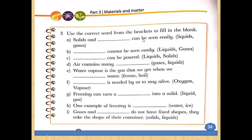Question three: use the correct word from the brackets to fill in the blank. Number a: solids and dash can be seen easily. Can you see gases? No. Can you see liquids? Yes. So the answer is: solids and liquids can be seen easily.